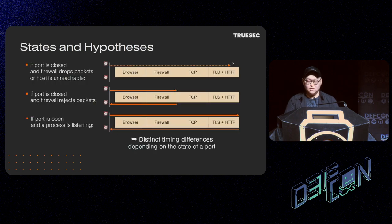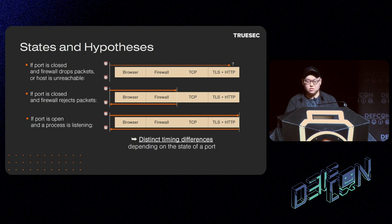Now we can imagine at least four components that are each responsible for a part of the round trip time of a network request: Browser, firewall, TCP, and TLS plus HTTP.